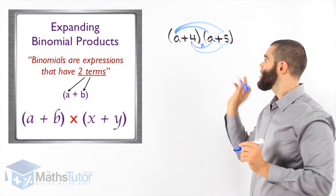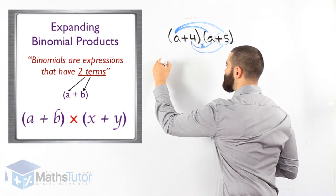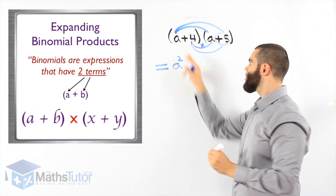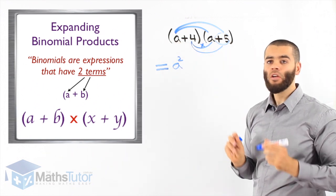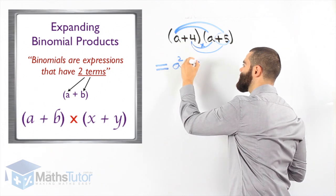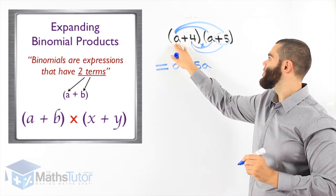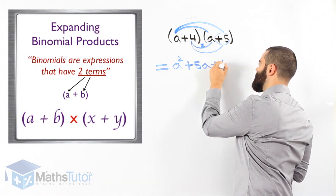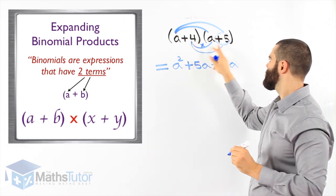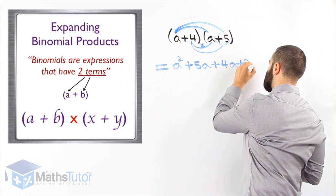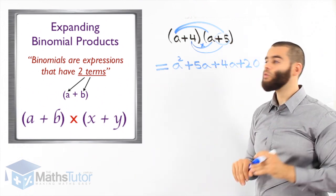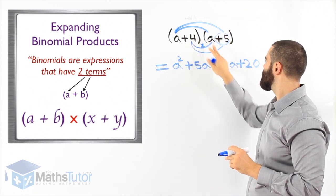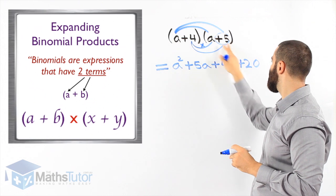Now let's work it out. A times A — we always work down — A times A is A squared. A times positive five: positive five times A is positive five A. Now we move to this one: four times A is positive four A. And four times five is twenty. So A times A — there it is. A times five — there it is. Four times A — there it is. And four times five — there it is.